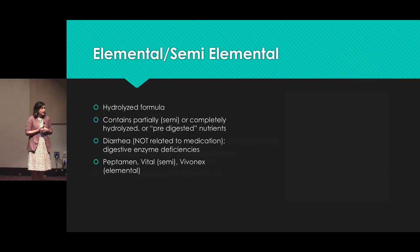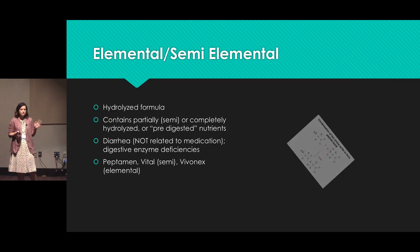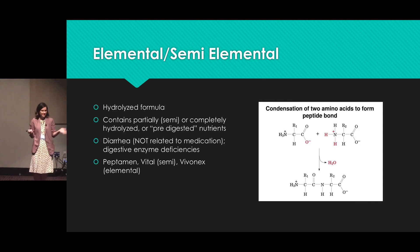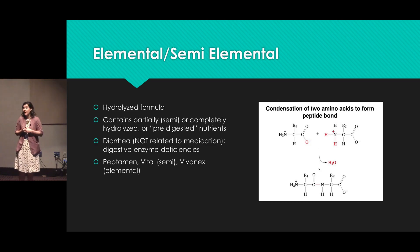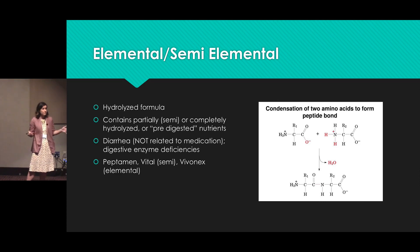The next type is an elemental or semi-elemental formula, also referred to as a hydrolyzed formula — basically what we call a pre-digested formula. Most of the components are already broken down; for example, your proteins — those peptide bonds are broken. We use this typically for patients experiencing a lot of diarrhea or who have pancreatic insufficiency, because the formula is already pre-digested and you don't need all the pancreatic enzymes to absorb it.